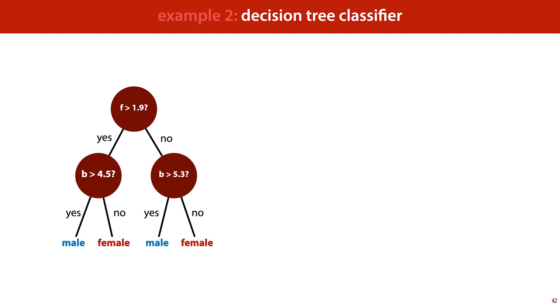This classifier consists of a tree, which studies one feature in isolation at every node. In this case, it moves to the left if the feature is lower than some threshold value, and to the right if the feature is higher. We start by looking at the flipper length. If the flipper length is higher than 1.9, then we move to the left. And if it's lower than 1.9, then we move to the right. Next, we look at the body mass. If we end up in this node, then if the body mass is higher than 4.5, we move to the left, and we return a classification of male. If it's lower than 4.5, we move to the right and return a classification of female. If the flipper length was lower than 1.9, we do the same thing, but we check whether the body mass is higher or lower than 5.3.